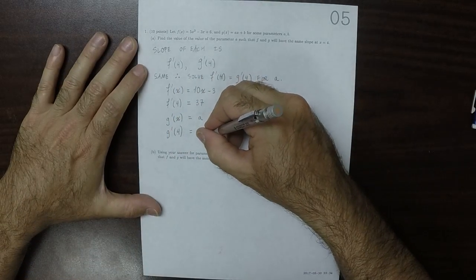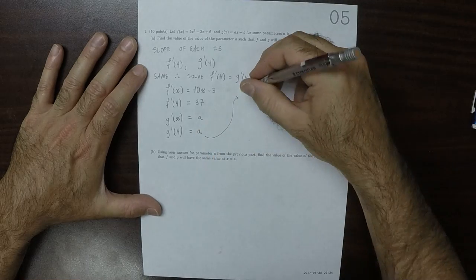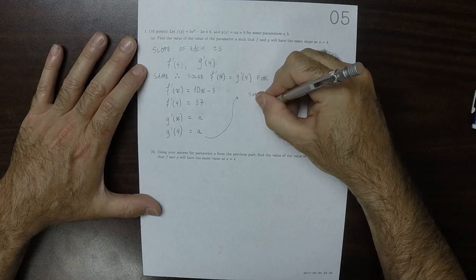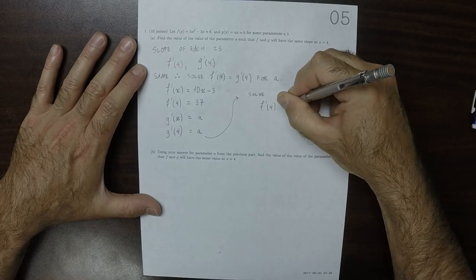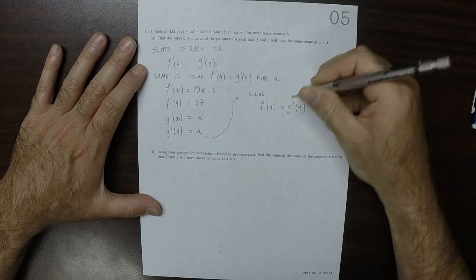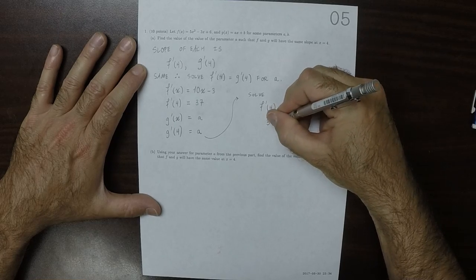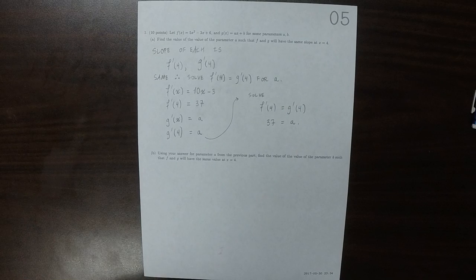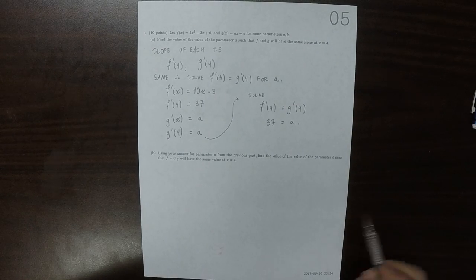And then solving these, derivative of f evaluated at 4 equal to the derivative of g evaluated at 4. That's telling us that the value of parameter a is 37. So that's the answer to part a.